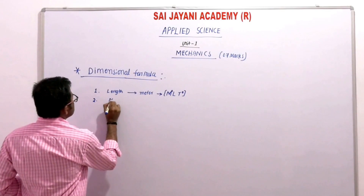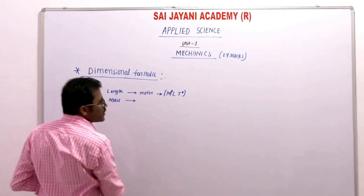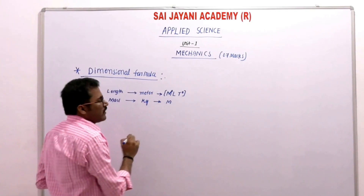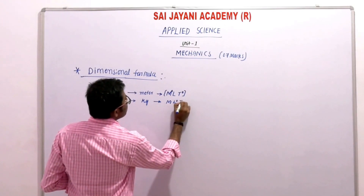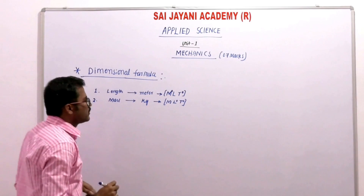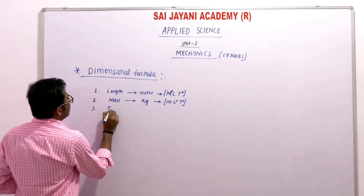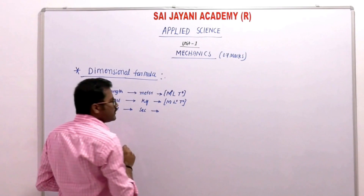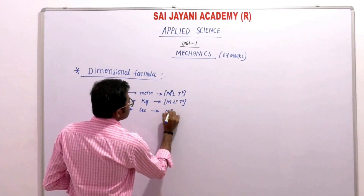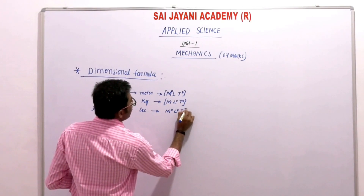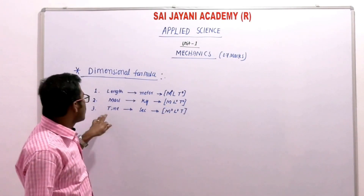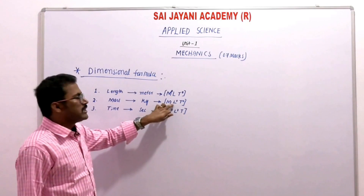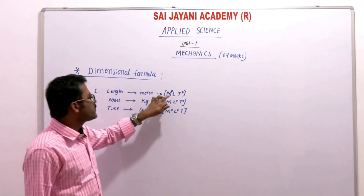For mass: the SI unit is kilogram. There is mass present, but no length and no time. So the dimensional formula for mass is M L⁰ T⁰. For time: the SI unit is second. There is no mass and no length, but there is time. So the dimensional formula for time is M⁰ L⁰ T.